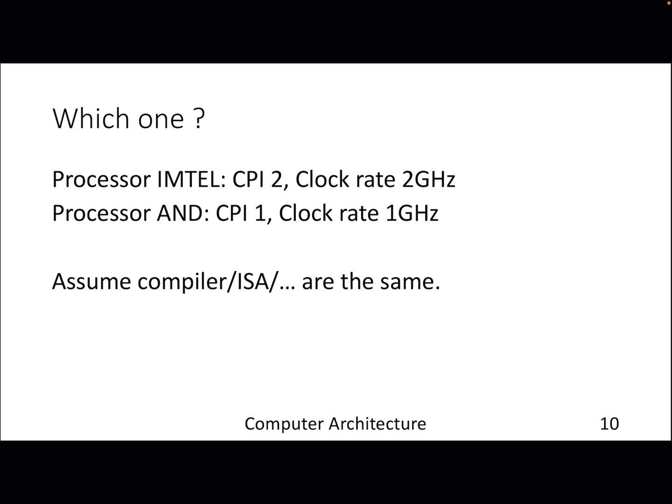Let's try to understand another subtle aspect here. Let's say tomorrow you go to your favorite electronic shop and you want to buy a processor. There are two options - a company called Intel and a company called AMD, and these are the specs of those two processors. One is taking more time - the cycle per instruction is two. So for each instruction it's taking two cycles. But the AMD processor is good - it's actually taking one cycle per instruction. But if you compare the clock rate, this is faster. It's a two gigahertz processor which means the clock cycle time is 0.5 nanosecond, whereas for AMD the clock cycle time is one nanosecond.